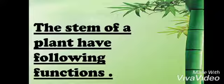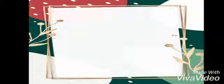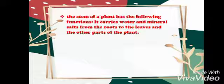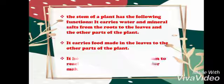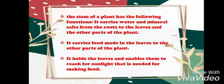The stem of a plant has the following functions: It carries water and mineral salts from the roots to the leaves and other parts of the plant. It carries food made in the leaves to other parts of the plant. It holds the leaves and enables them to reach for sunlight that is needed for making food.